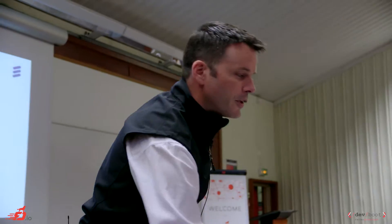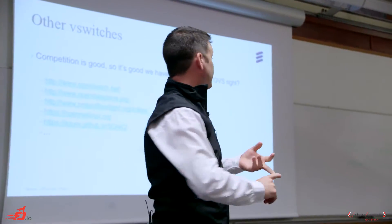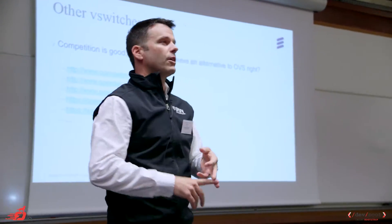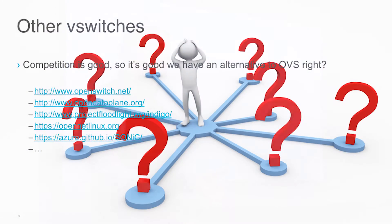We need alternatives like Open vSwitch, Open Data Plane, Floodlight, Indigo — there are so many vSwitches available today. But choice isn't the answer. We have enough choice. I think what we need to look at is why is FD.io a good choice. Why is FD.io something that we see as being valuable? From my perspective, all of the options we have today are very much built around the same type of architecture.